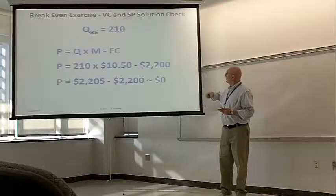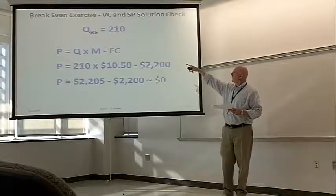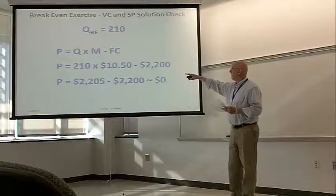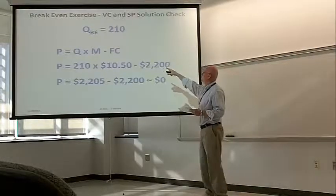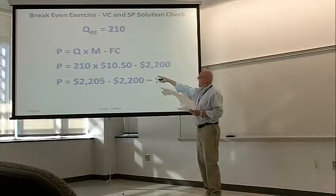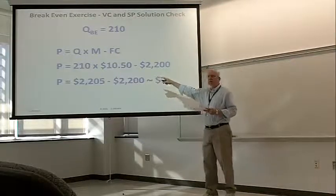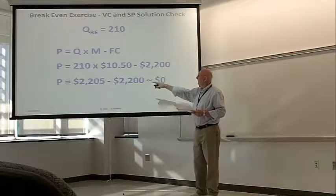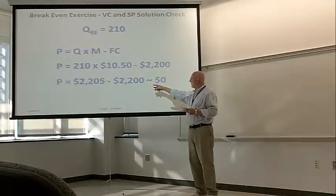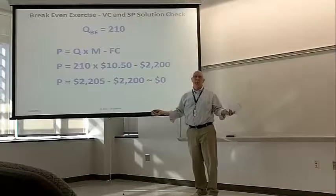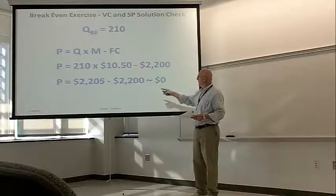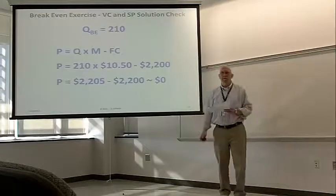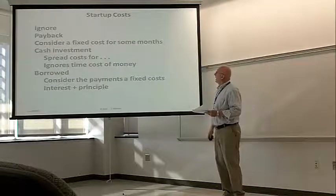Quick solution check. Quantity breakeven is 210. The profit, quantity times margin minus the fixed cost, 210 times $10.50, that's the margin, minus the $2,200 fixed cost. So the profit is $2,205 minus $2,200, a little rounding discrepancy there, and that's about zero. So, yep, it actually works. Good idea to check every so often.